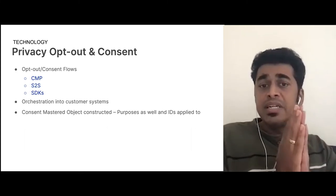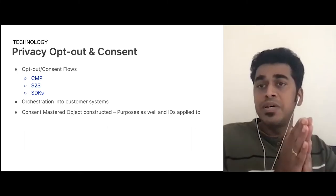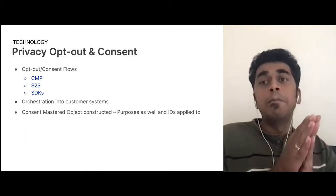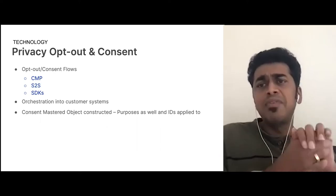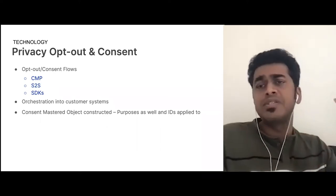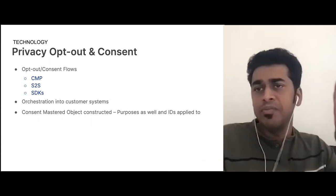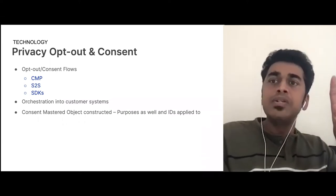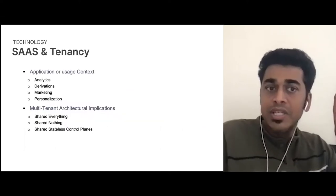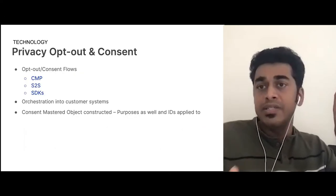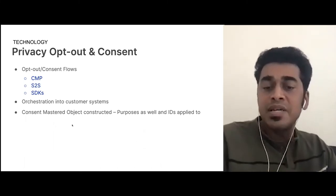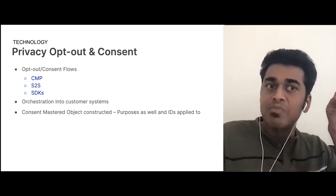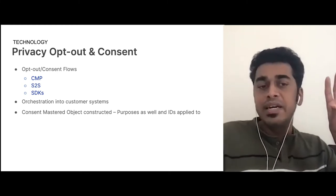The consent master object that is constructed starts having purpose and IDs applied to it. In the past when running DaaS, it was primarily a yes/no kind of parameter — using a data partner consent and removing it based on IDs. But here, since we are talking about application and usage context, the purpose and the IDs of each purpose become core entities of the mastered object as well. So the consent object itself becomes much more expanded than how it would operate in a data-as-a-service platform.